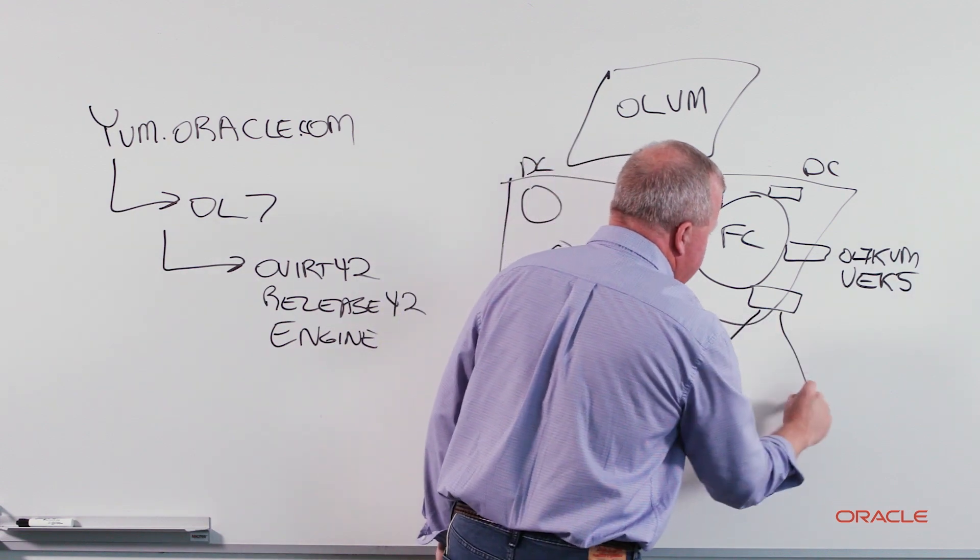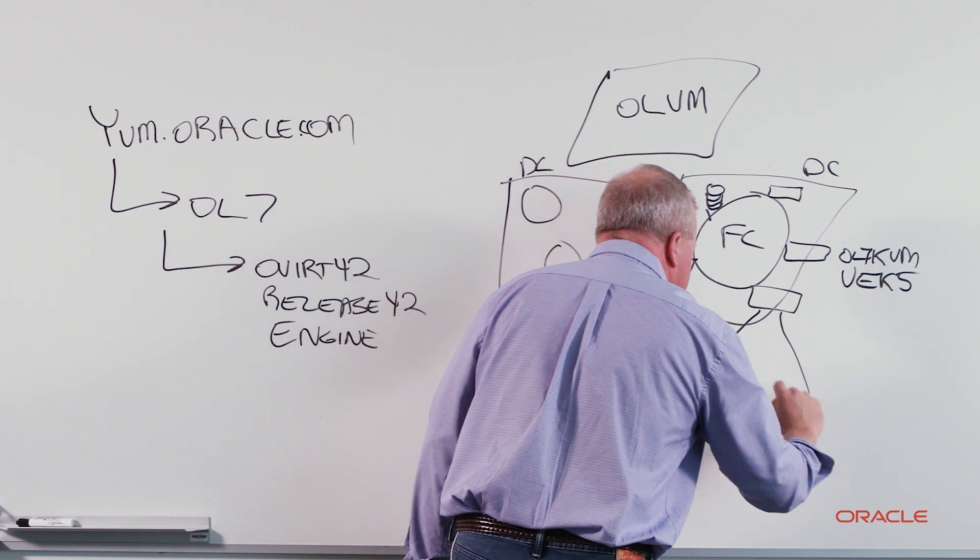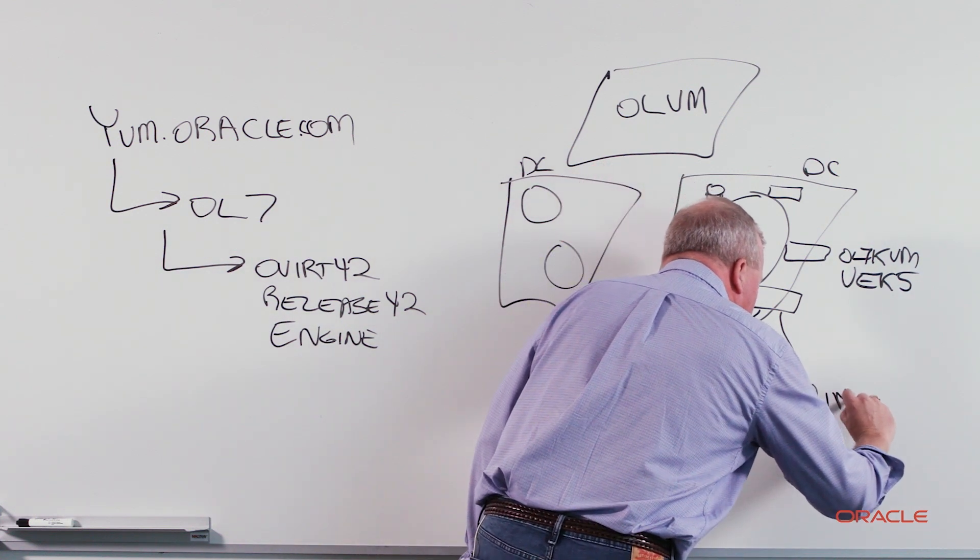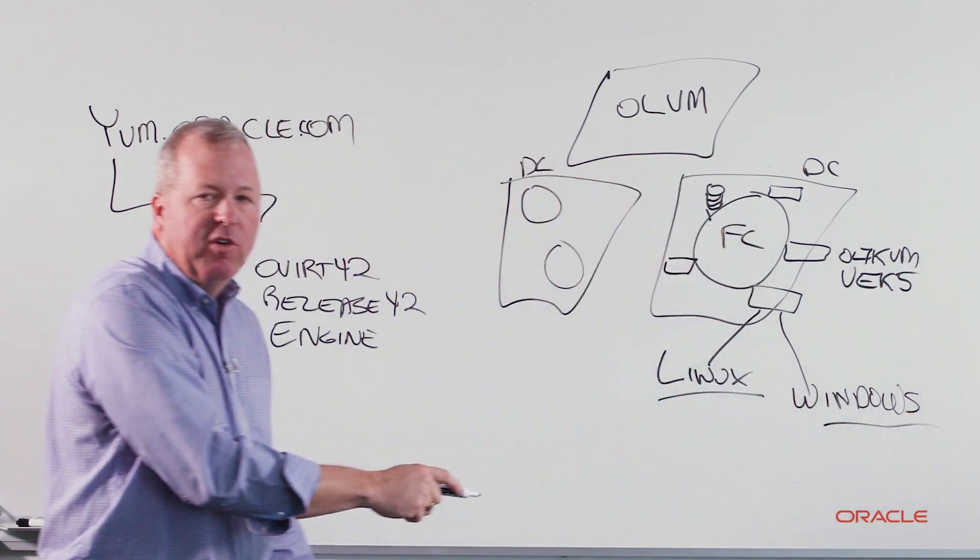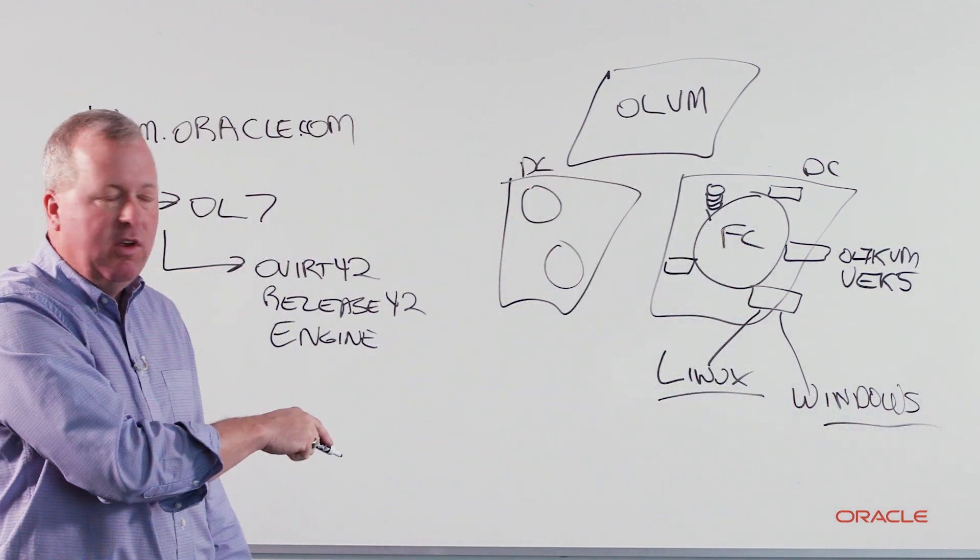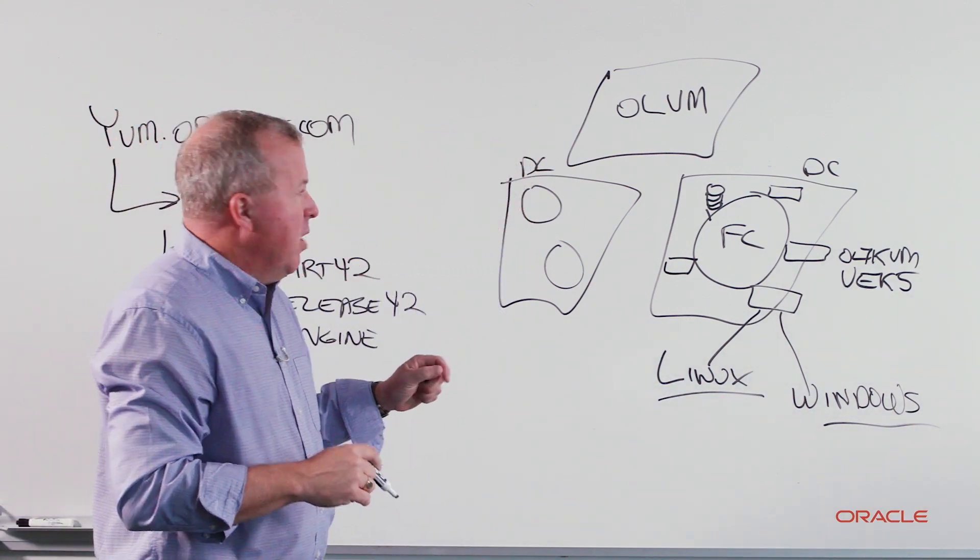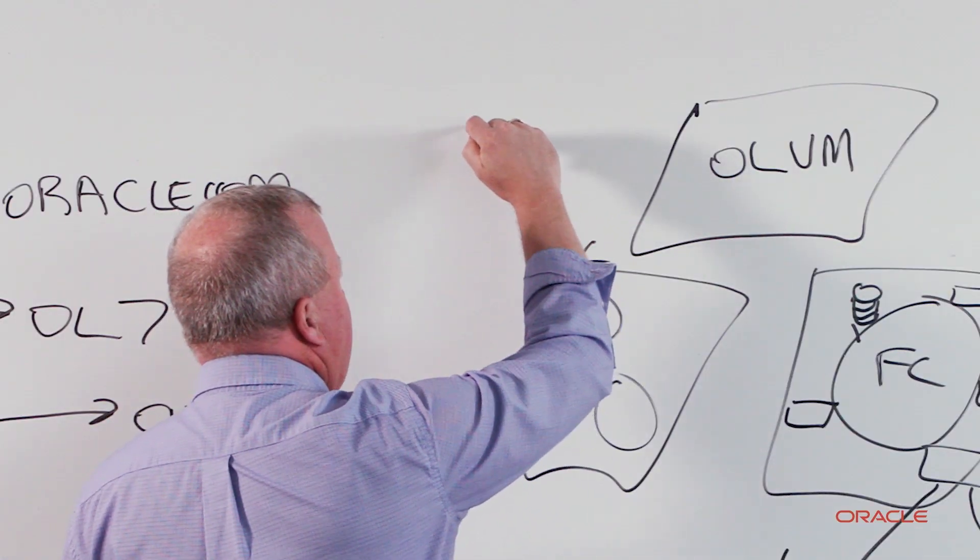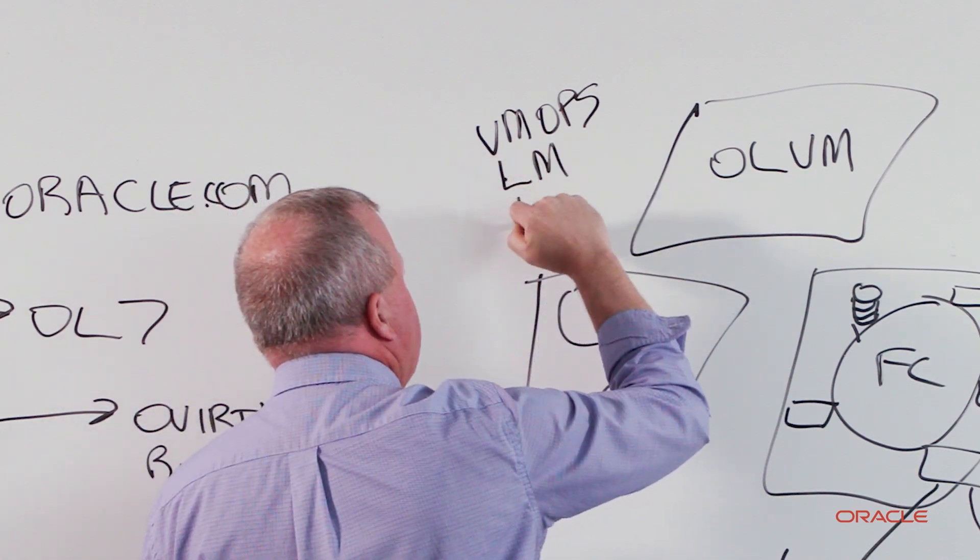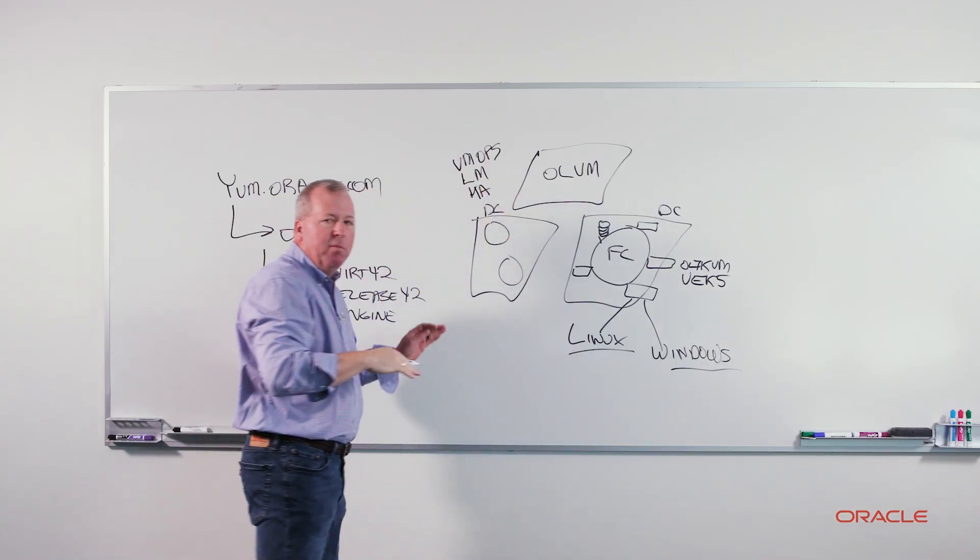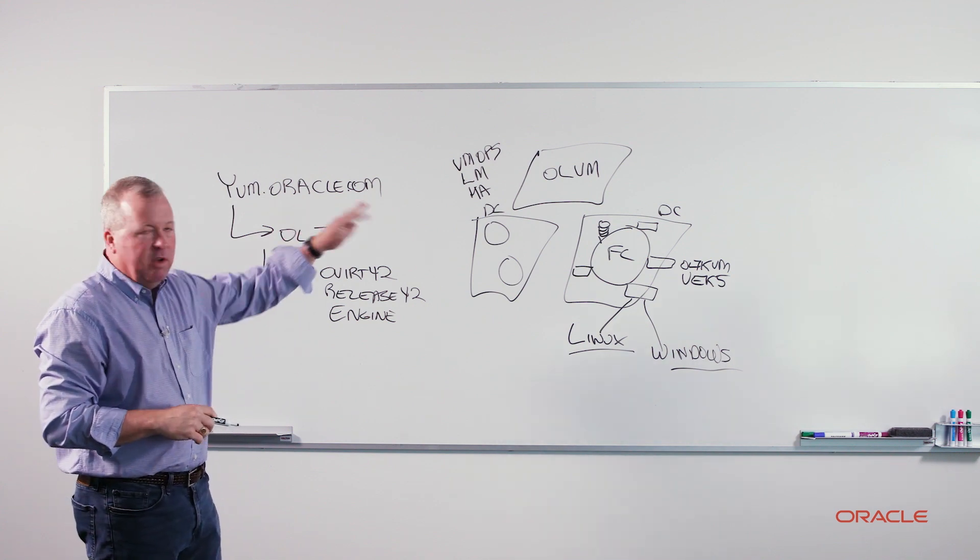From that point, you'll be able to build out all your virtual machines. And these can be Linux virtual machines or Windows virtual machines. A number of different versions of the different operating systems that you can run within your virtual machines. So this is your basic environment that you get set up. This manager will allow you to do all your VM operations, your live migrations, your high availability. So all the basic operations that you need to manage your virtualization within your data center can be done with this new manager.